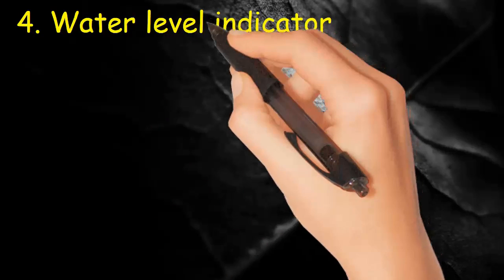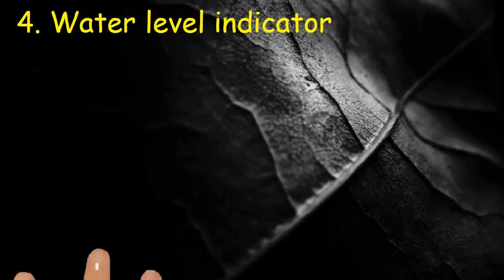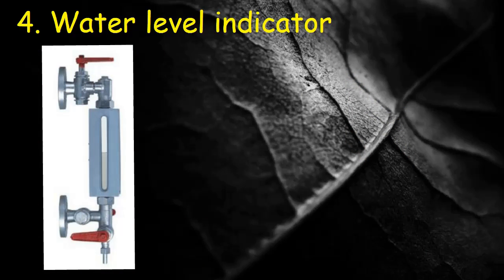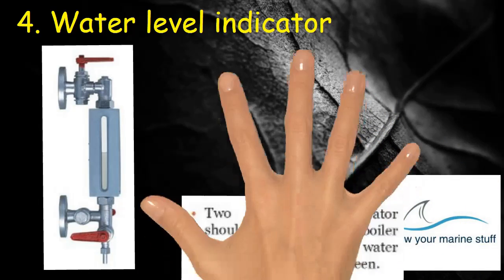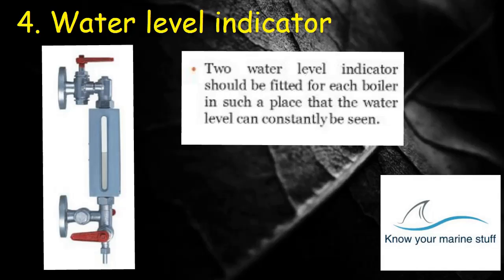Water level indicator. Boiler is fitted with multiple water level indicators to make sure that operators see the boiler water level for safe operation of boiler. Two water level indicators should be fitted for each boiler in such a place that the water level can constantly be seen.